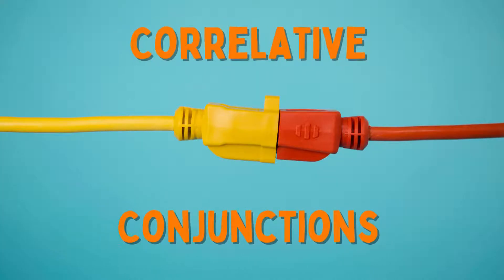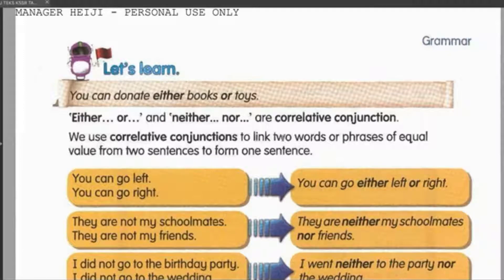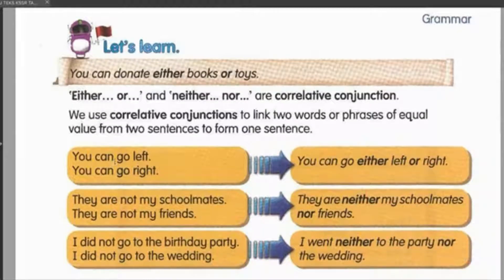Grammar — Correlative Conjunctions. Today we are going to look at two correlative conjunctions. The first one is 'either or' and the second one is 'neither nor'. If you still remember, we have learned this previously but let's take a look at these one more time. Where and why do we use correlative conjunctions? These are used to link two words or phrases of equal value from two sentences to form one sentence.